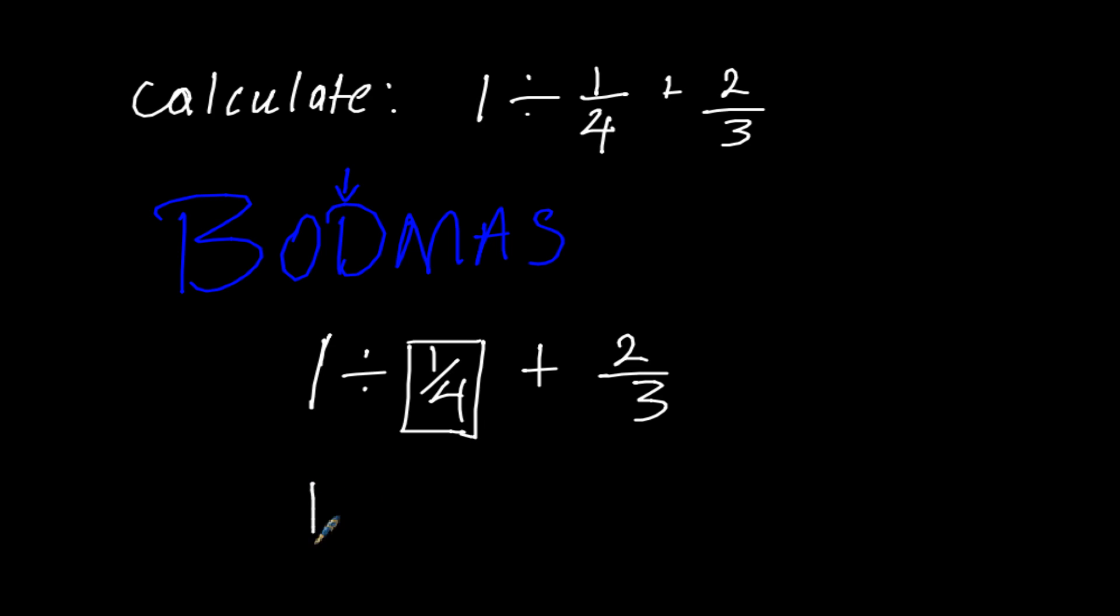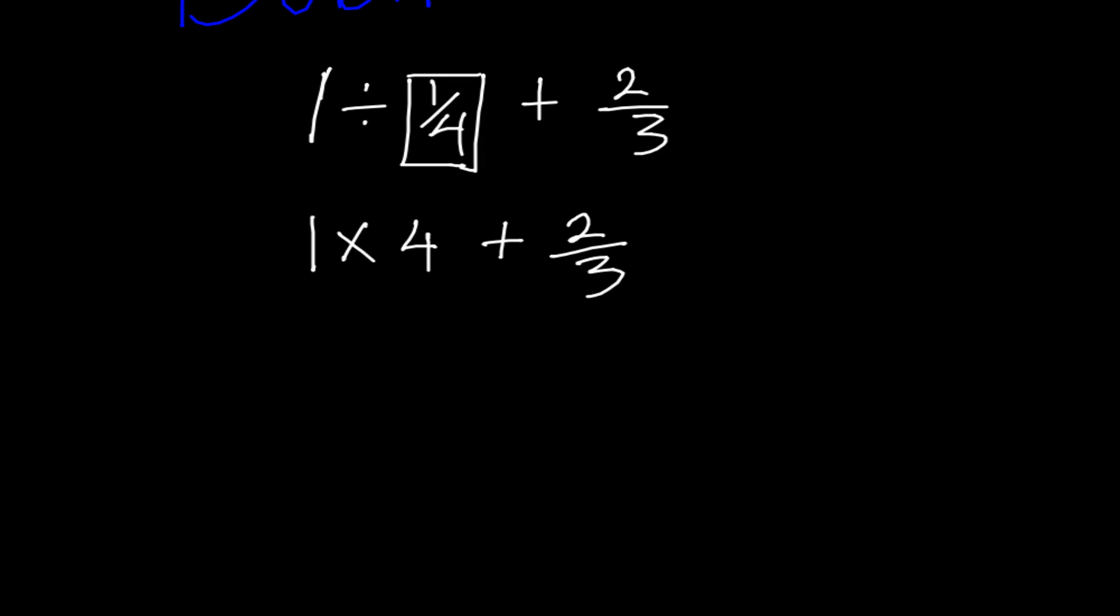So that will be 1 times the reciprocal of 1 over 4, which is 4 over 1, which is just 4, then plus 2 out of 3. So 1 times 4 is 4 plus 2 out of 3.